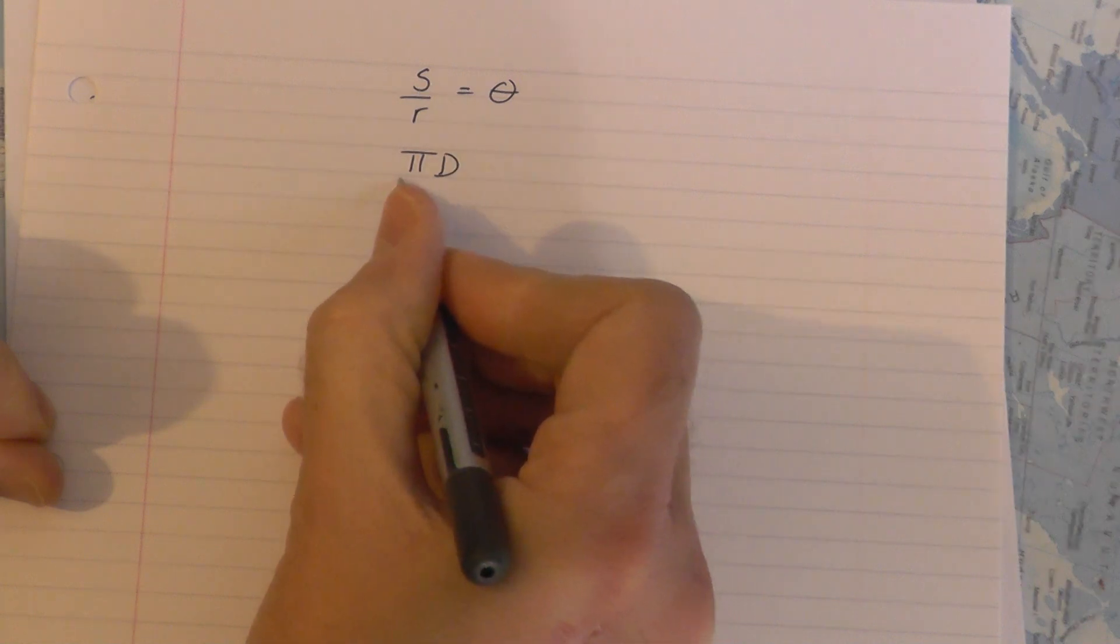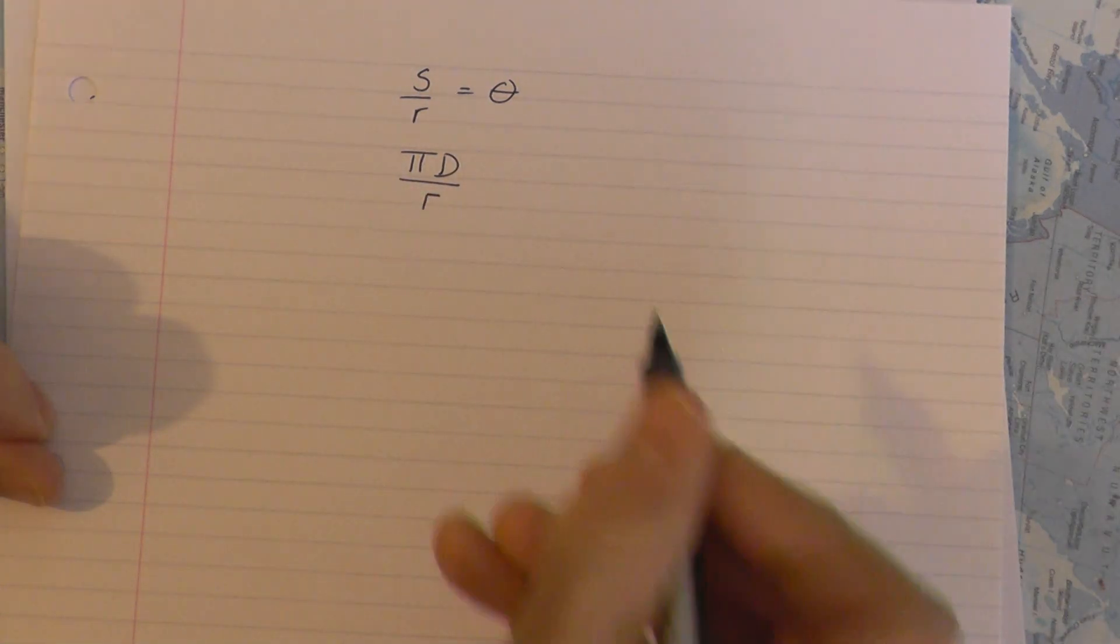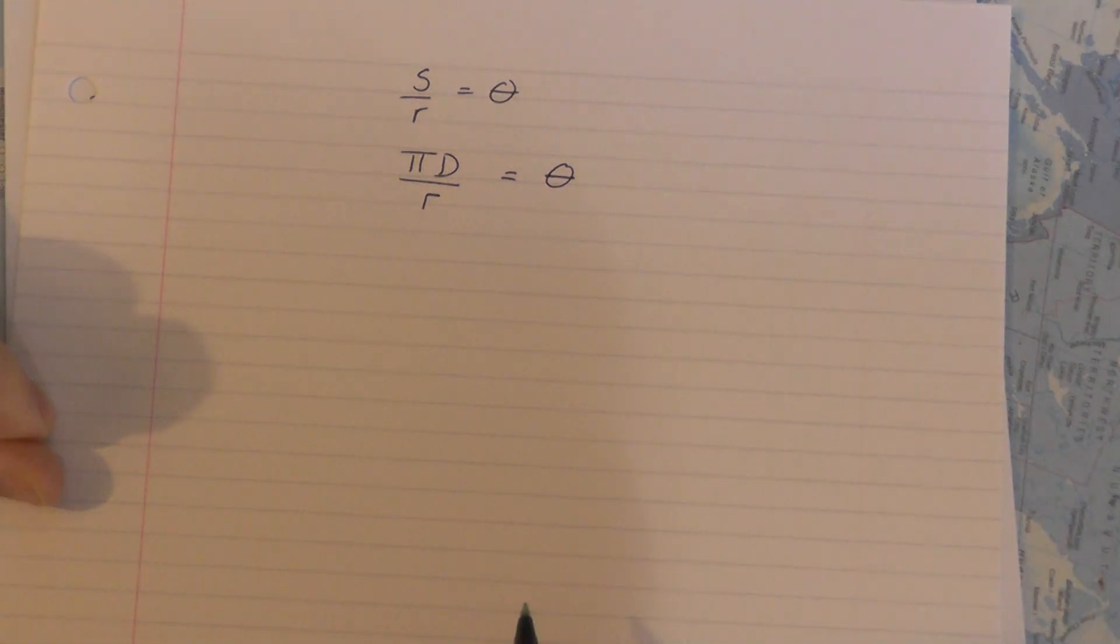So arc length π D compared to the radius of the full circle will give you the angle as measured in radians for a full circle.